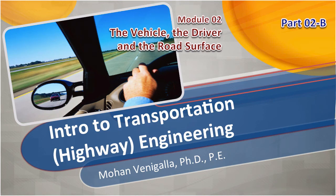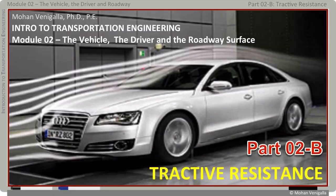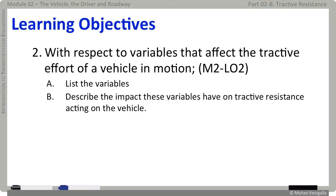Welcome back to module 2 of the video series on Intro to Highway Transportation Engineering. In this part, which is part 2b, we will look into how Tractive Resistance of a Vehicle affects highway design. The learning objectives include listing variables that affect Tractive Effort of a vehicle in motion, and describing the impact these variables have on Tractive Resistance acting on the vehicle.